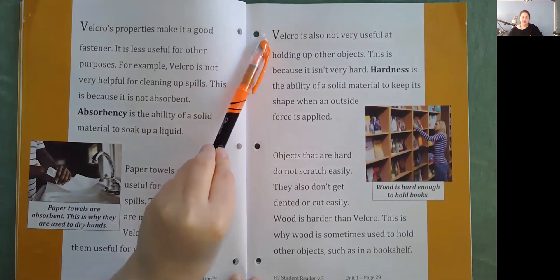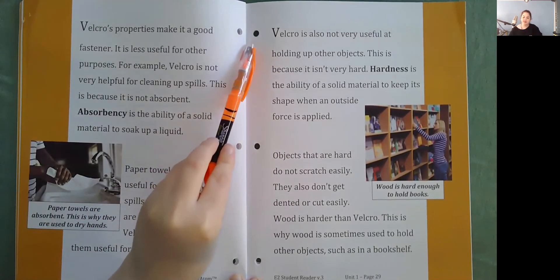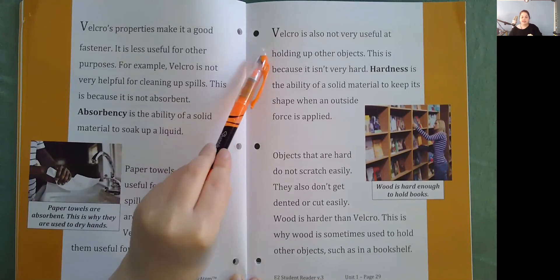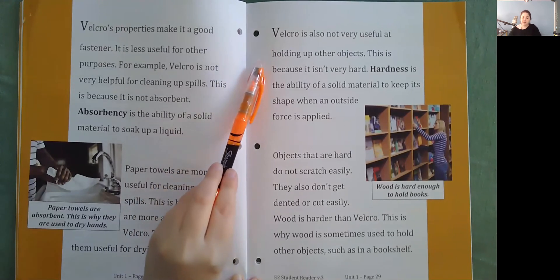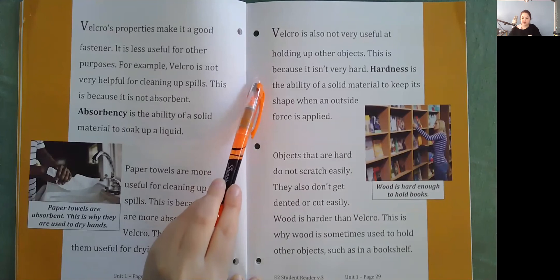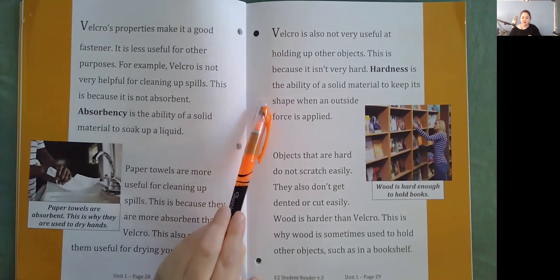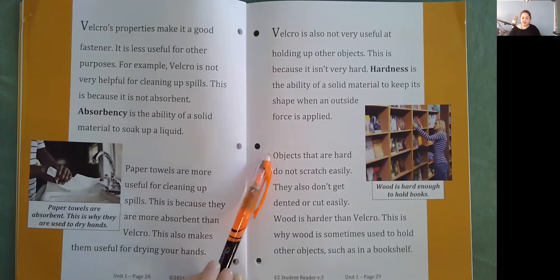Velcro is also not very useful at holding up other objects. This is because it isn't very hard. Hardness is the ability of a solid material to keep its shape when an outside force is applied. Objects that are hard do not scratch easily. They also don't get dented or cut easily. Wood is harder than Velcro. This is why wood is sometimes used to hold other objects such as in a bookshelf.